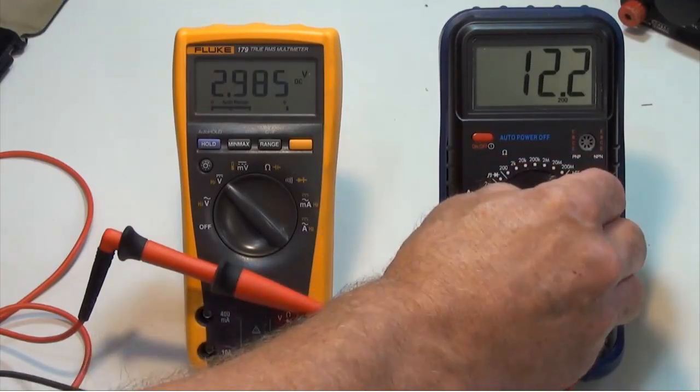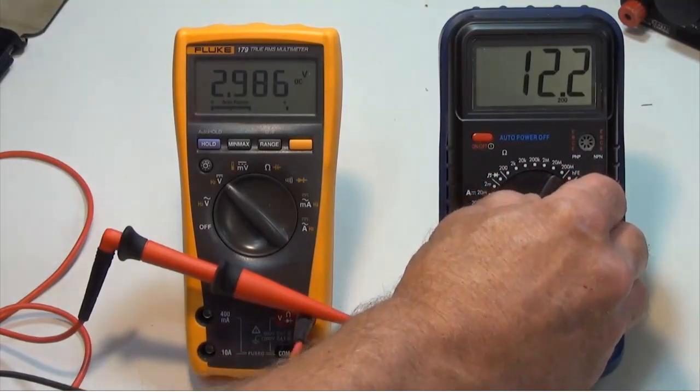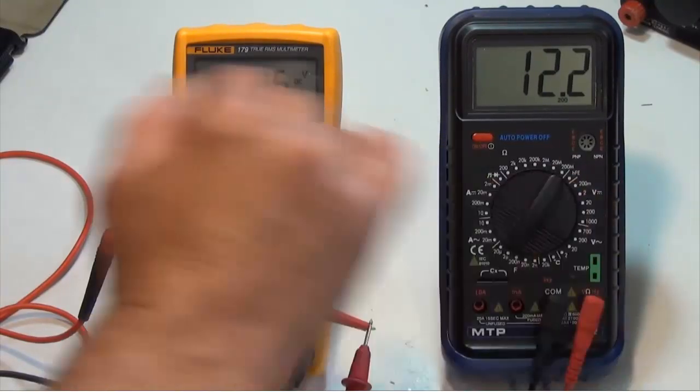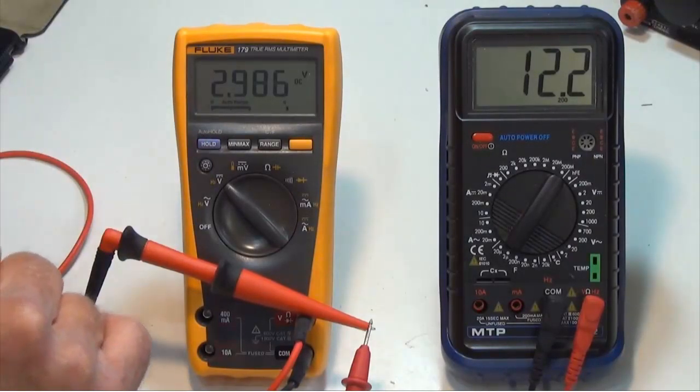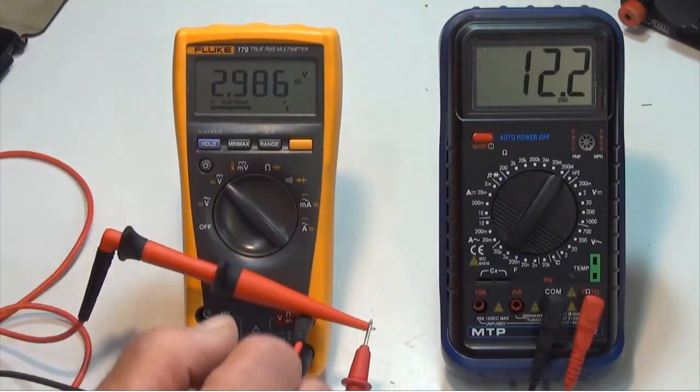I'm actually measuring the resistance of the Fluke meter while I'm doing this. So on the 200 mega ohm range, I'm actually getting close to 3 volts DC, and I'm getting 12.2 mega ohms from the Fluke.